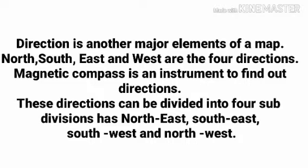North, South, East and West are the four directions. Magnetic compass is an instrument to find out directions. These directions can be divided into four subdivisions as North East, South East, South West and North West.